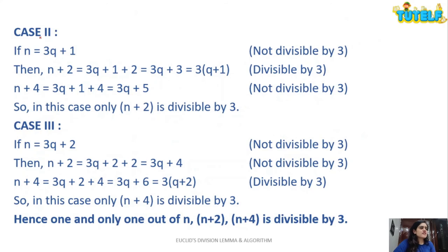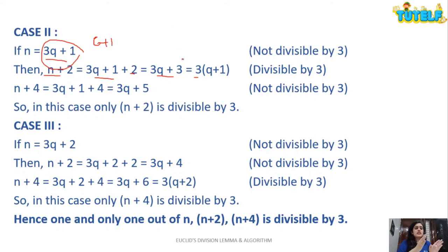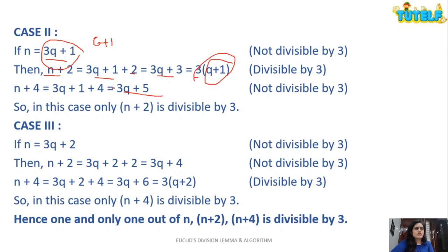Case 2: N = 3Q + 1. This is not divisible by 3 (e.g., if Q = 2, N = 7). For N+2 = 3Q + 1 + 2 = 3Q + 3 = 3(Q + 1) — divisible by 3. For N+4 = 3Q + 1 + 4 = 3Q + 5 — not divisible by 3. So in case 2, only N+2 is divisible by 3.